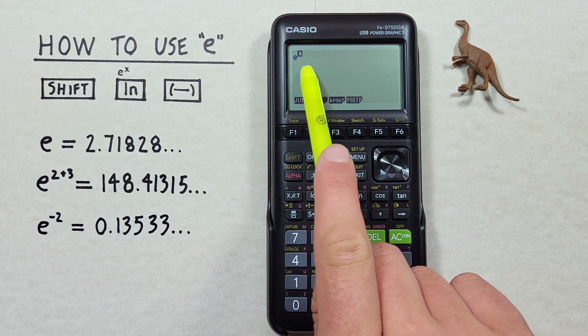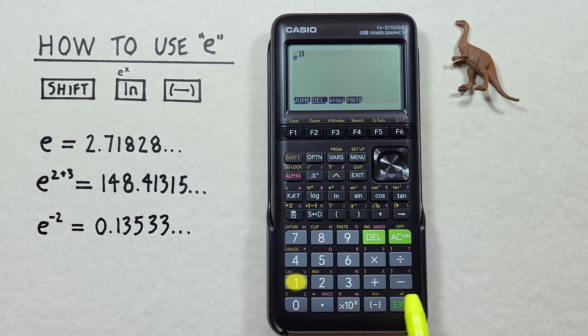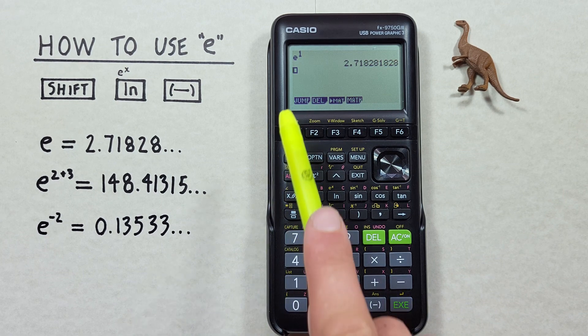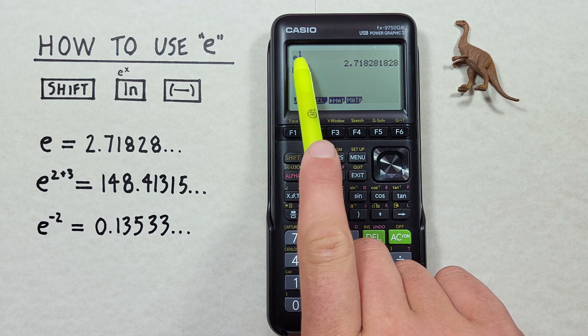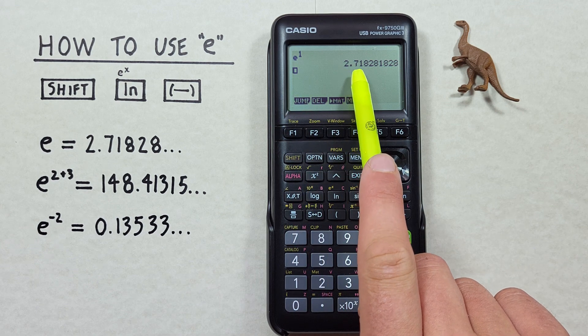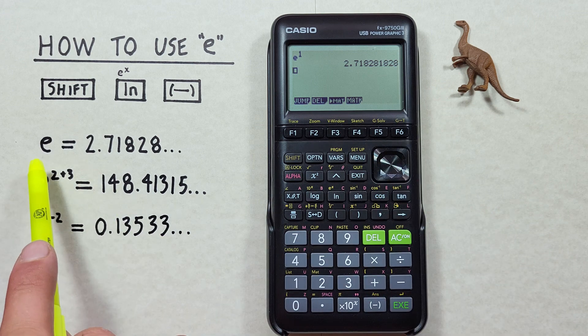Since we just want E by itself, we can just press 1 and then hit the execute key. That gives us E to the power of 1, or just E, which is equal to 2.71828 and so on, which is correct.